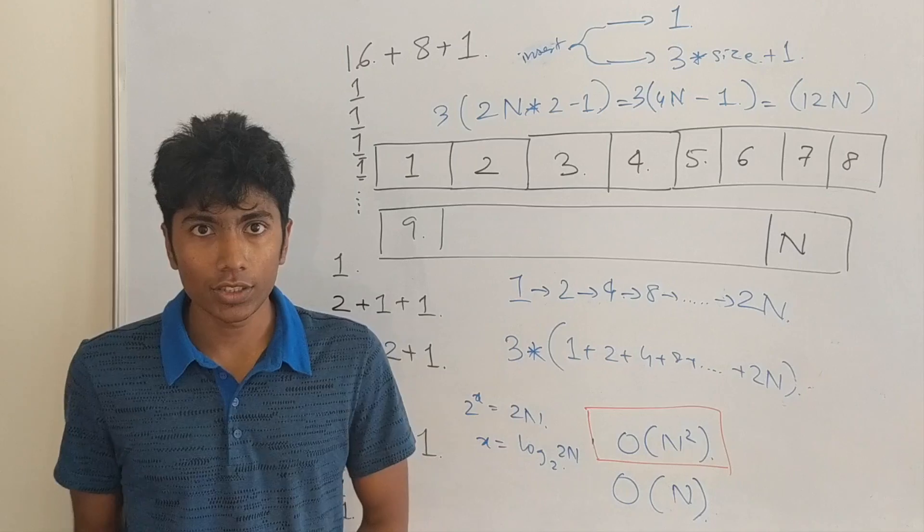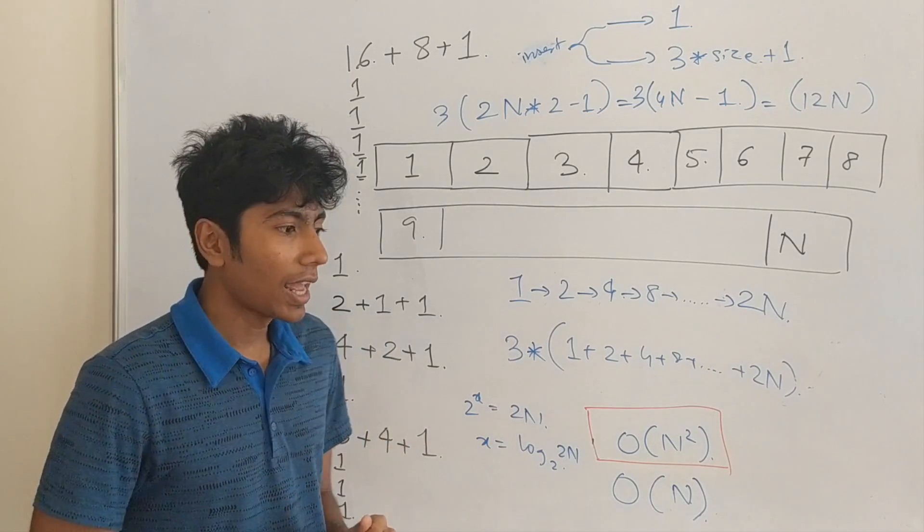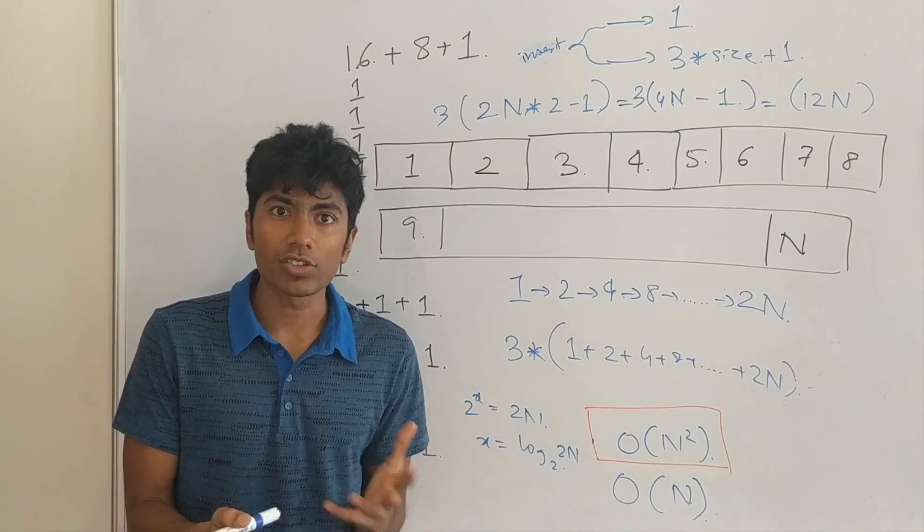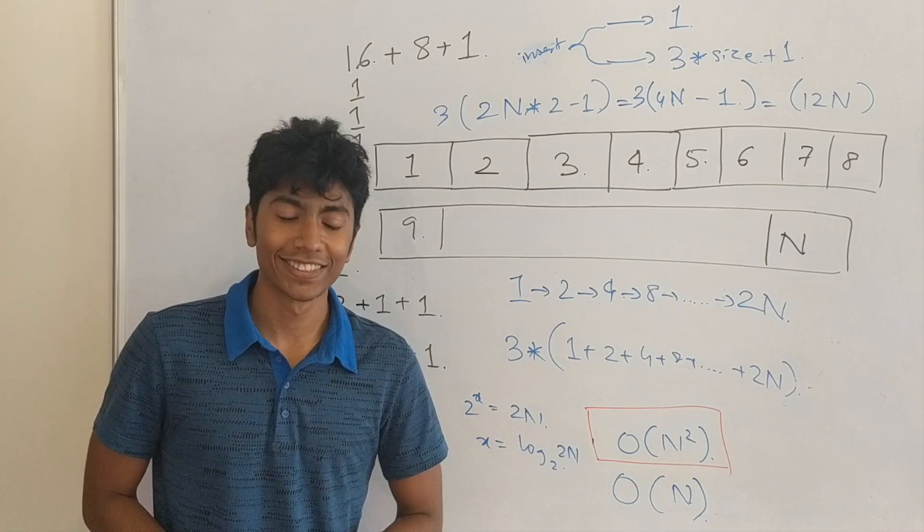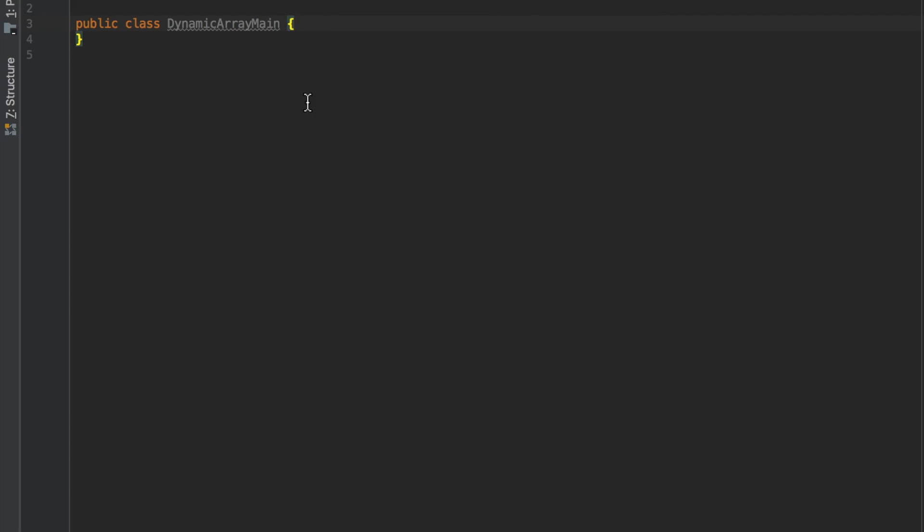So, now what we are going to do is, we are going to write the code for this amortized analysis. And, I am going to be throwing in a few extra challenges while actually coding this. So, now we are writing the code for this. And, what we have is a main function.